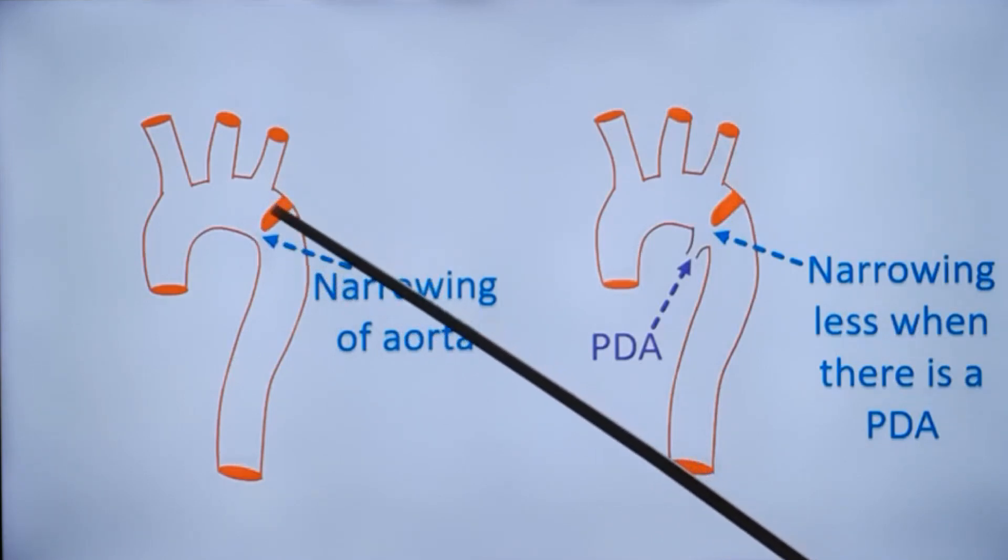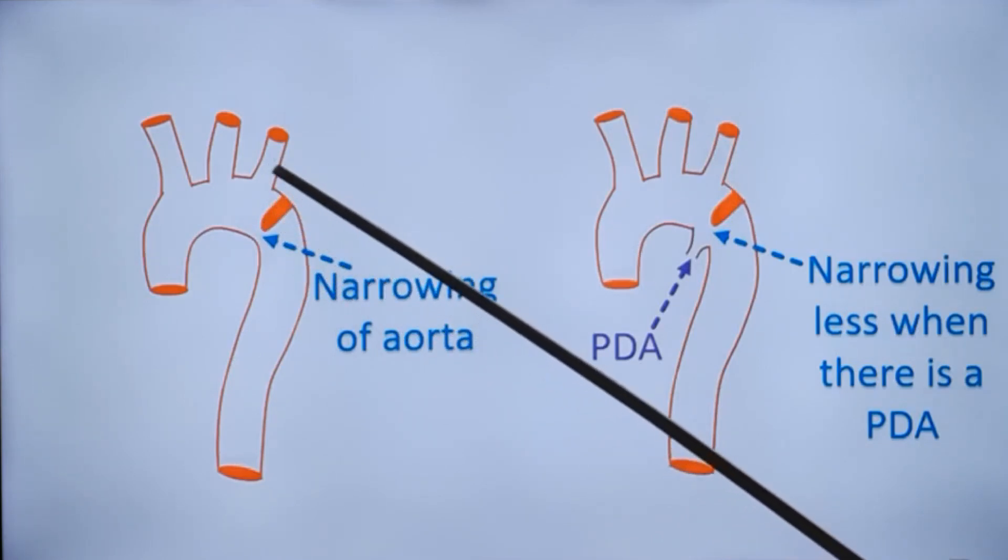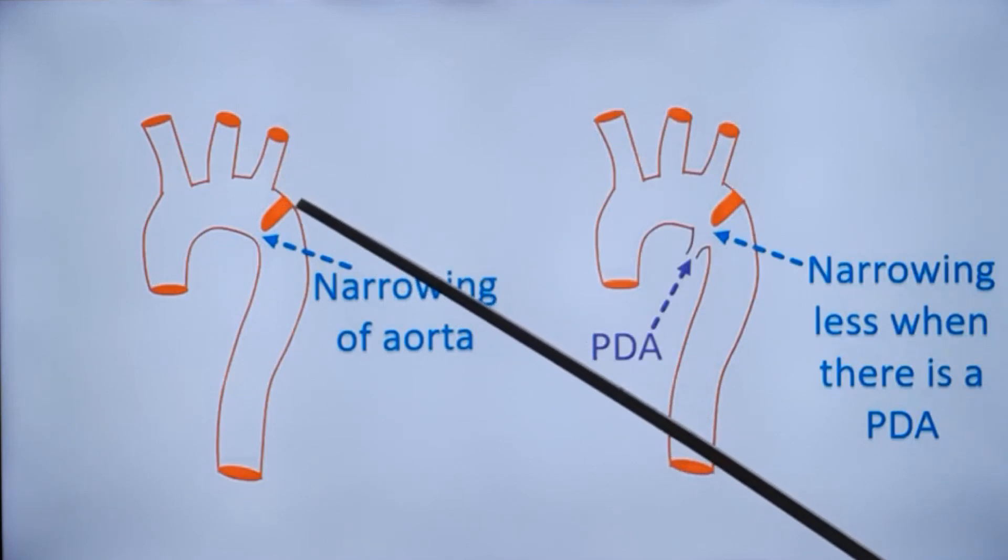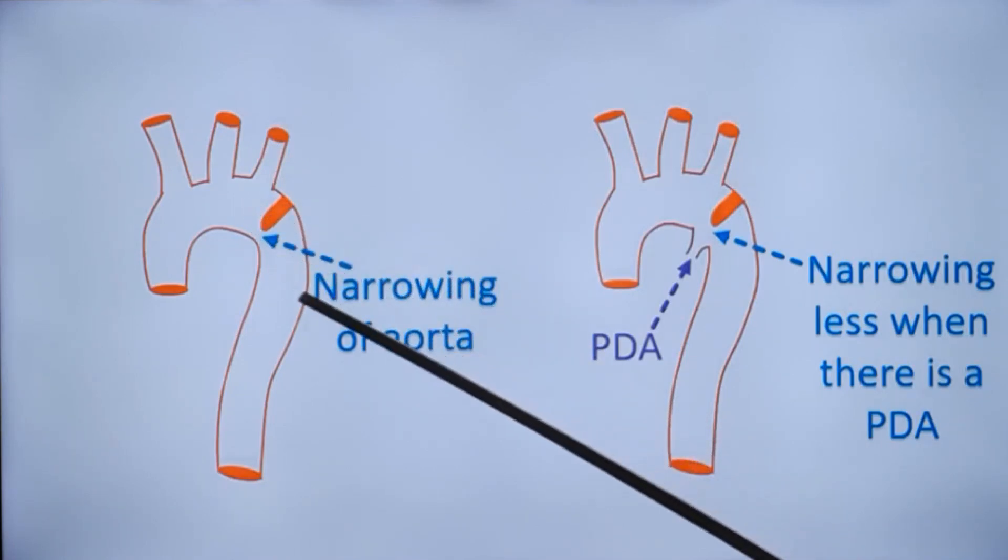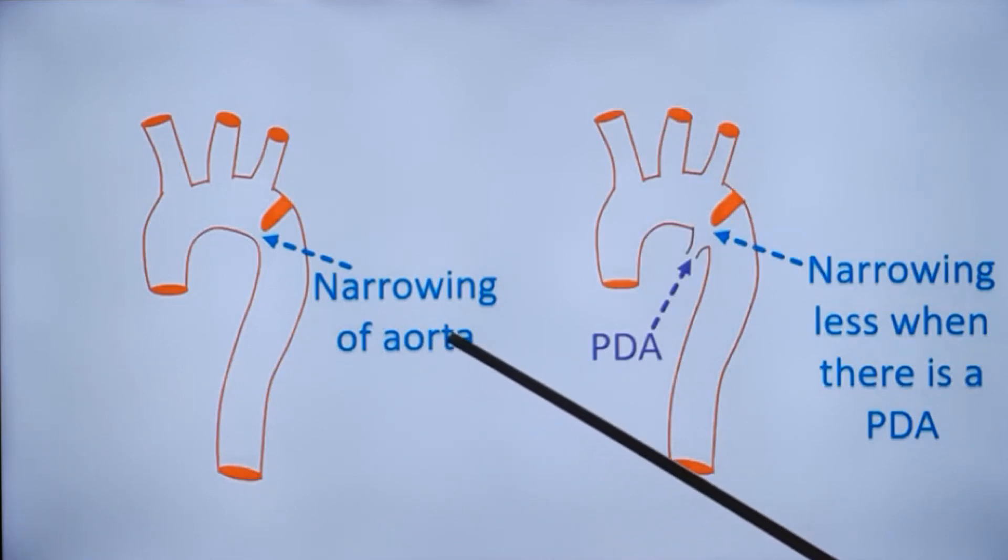This is a diagrammatic representation of the narrowing of the descending aorta just beyond the left subclavian. It's a shelf-like structure producing narrowing of descending aorta. This will be evident on suprasternal view in echocardiography.